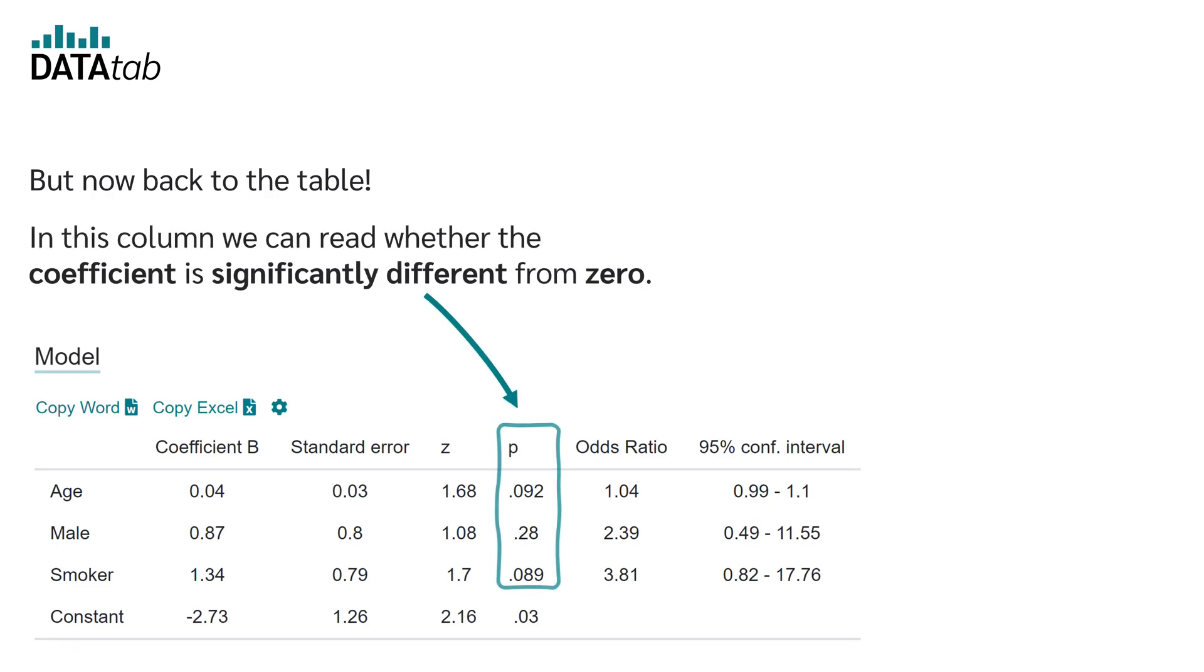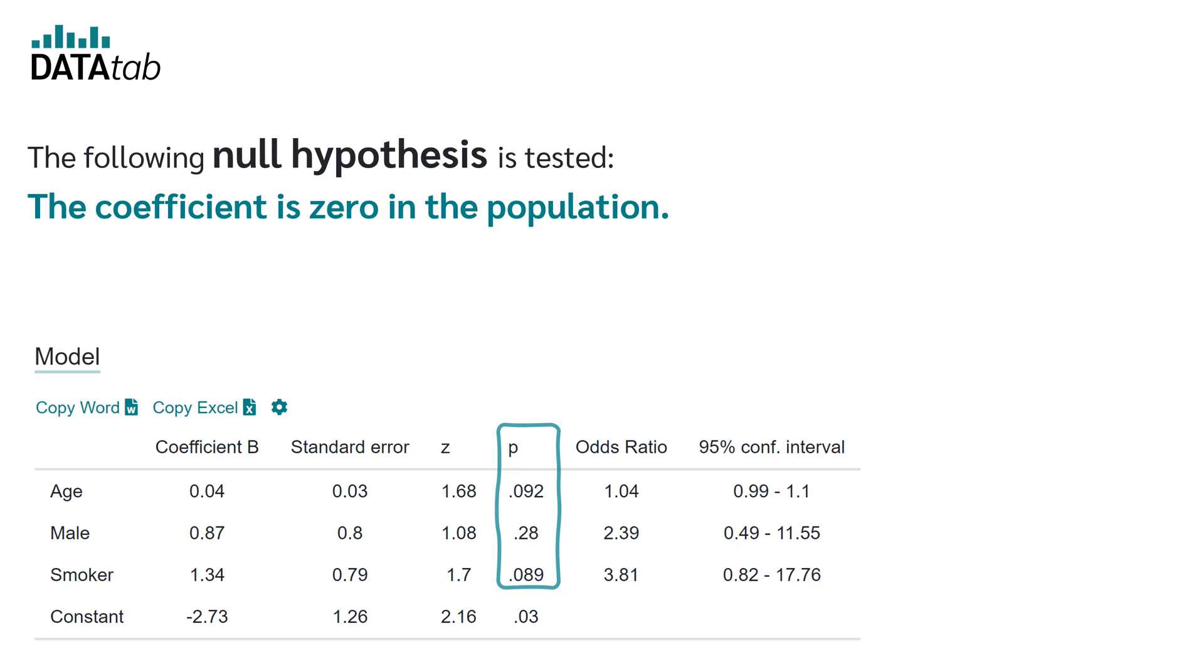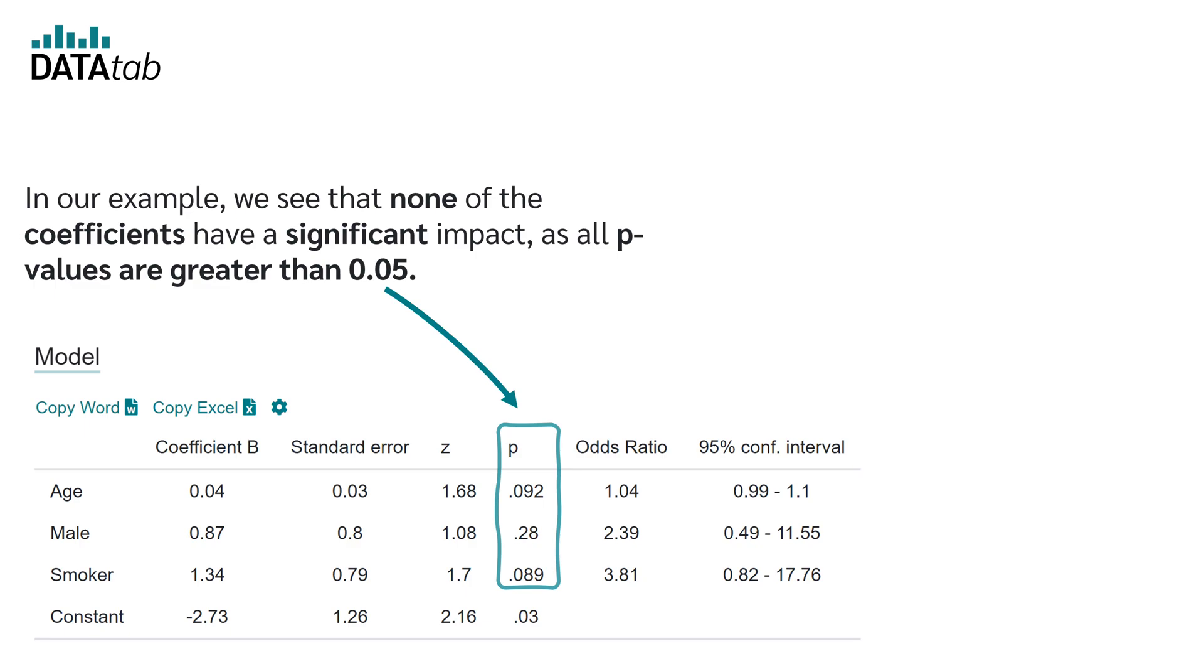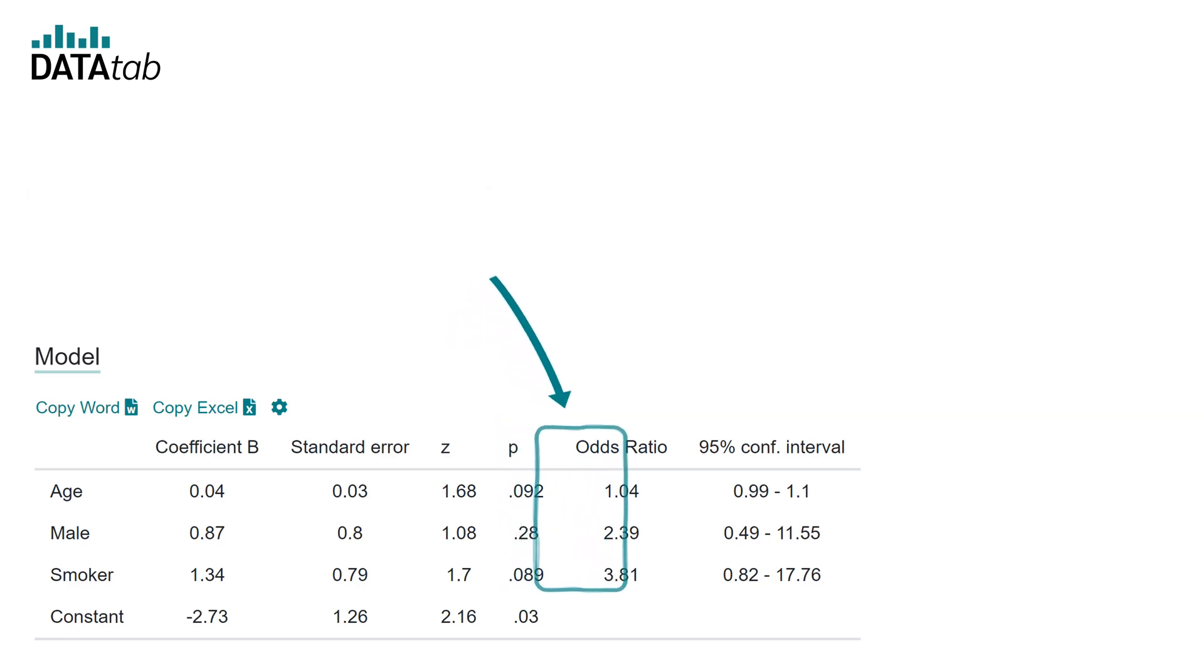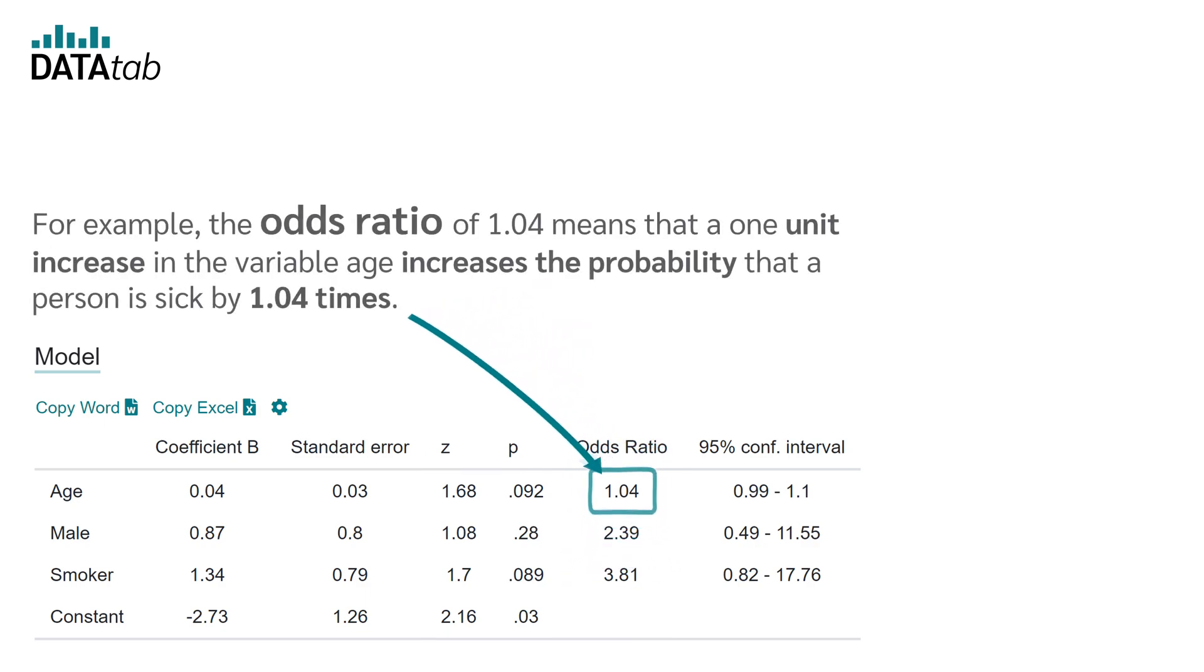But now back to the table. In this column, we can read whether the coefficient is significantly different from 0. The following null hypothesis is tested: the coefficient is 0 in the population. So, if the value is smaller than 0.05, the respective coefficient has a significant influence. In our example, we see that none of the coefficients have a significant impact as all p-values are greater than 0.05. In this column, we can then read the odds ratio. For example, the odds ratio of 1.04 means that a 1-unit increase in the variable age, which means that the person is 1 year older, increases the probability that the person is sick by 1.04 times.